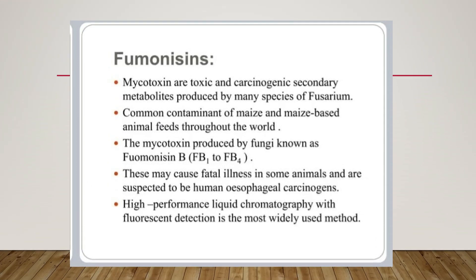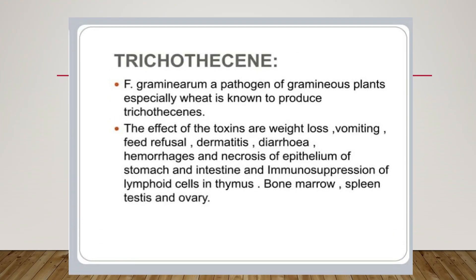Second, fumonisins: mycotoxins are toxic and carcinogenic secondary metabolites produced by many species of Fusarium. They are a common contaminant of maize and maize-based animal feeds throughout the world. The mycotoxin produced by fungi known as Fusarium moniliforme may cause fatal illness in some animals and is expected to cause esophageal carcinogenesis in humans. High-performance liquid chromatography with fluorescent detection is the most widely used method for fumonisins analysis.